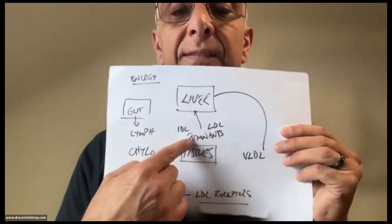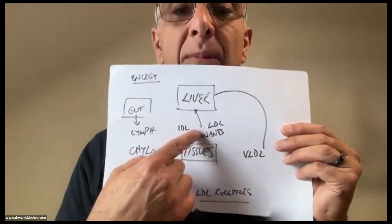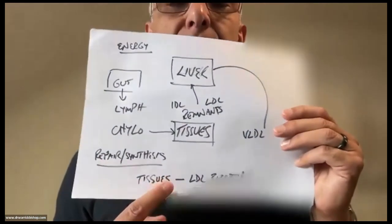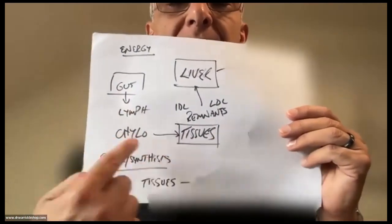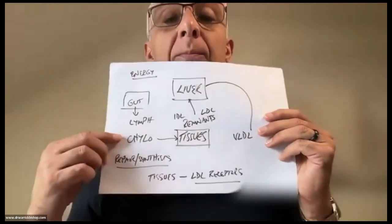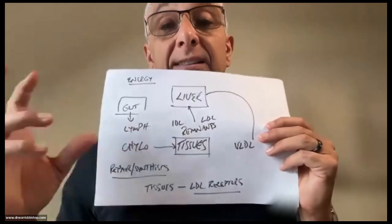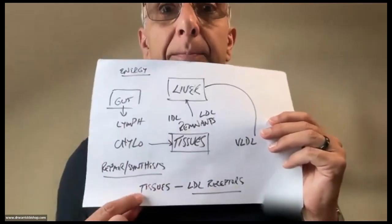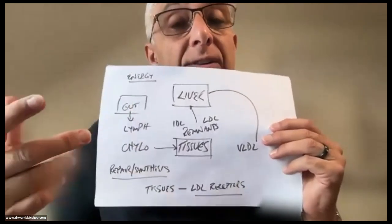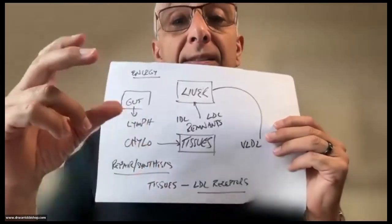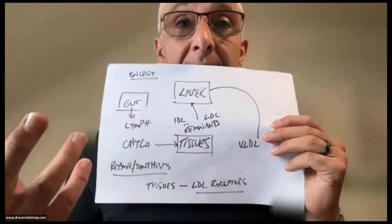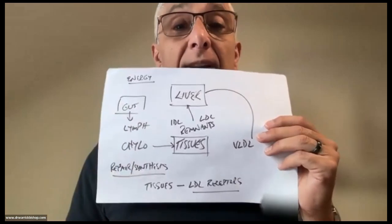It then leaves these remnants in the bloodstream which get taken up by the liver. This begs the question: why do we have cholesterol in the chylomicron and the VLDL? Well, the body does need cholesterol — it absorbs it, it makes up the particle, and every tissue in the body has LDL receptors so it can take up LDL and use it for synthesis, whether that's repair or formation of a hormone.